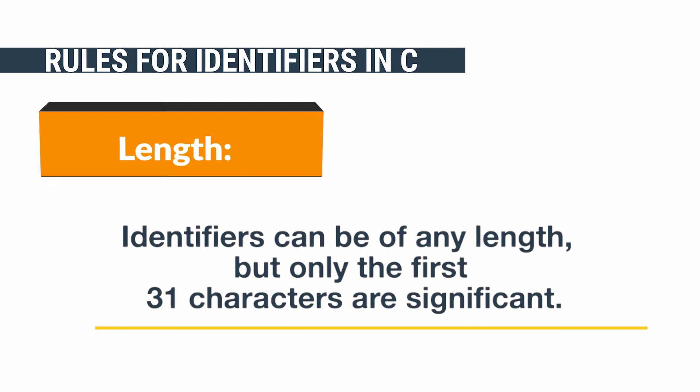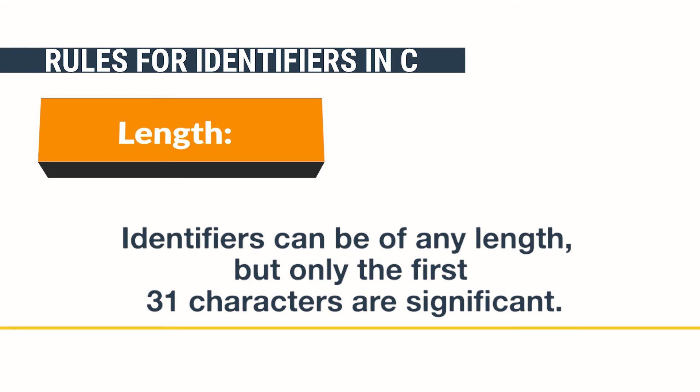Length: Identifiers can be of any length, but only the first 31 characters are significant. This means that two identifiers differing only in characters after the 31st are considered the same.